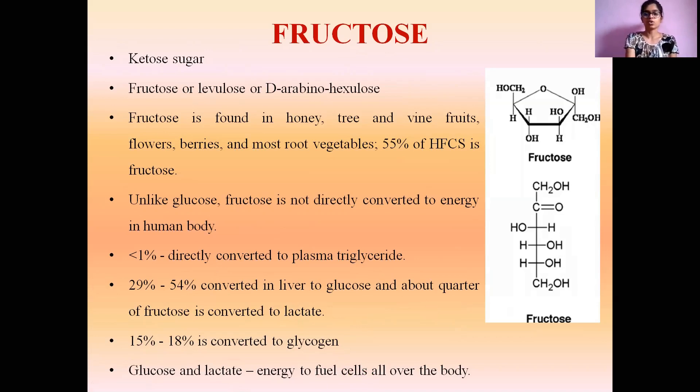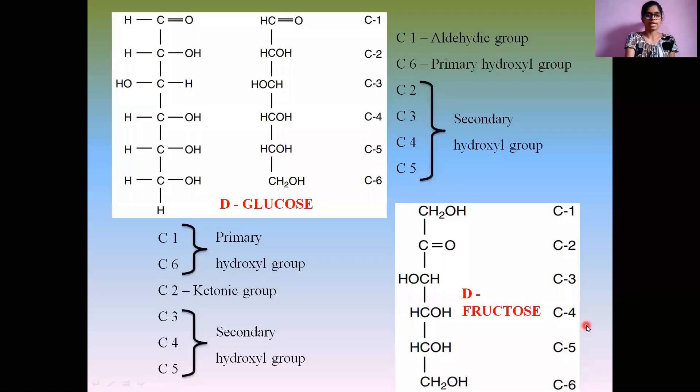Like glucose, fructose also exhibits both cyclic and acyclic structures, which are represented here. Moving on, we will see the structural classification of aldose and keto sugars. Aldose sugars, for example glucose, have the aldehyde group as the functional group present on the top, representing the first carbon atom, and the primary hydroxyl group, C6, is present at the last.